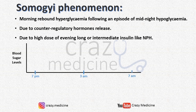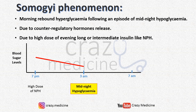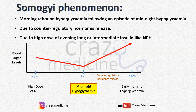Let me explain graphically. Suppose at 7 pm a high dose of NPH is administered. Its spike will come around 3 am, which will cause midnight hypoglycemia, and due to this hypoglycemia there is release of counter-regulatory hormones, which will cause early morning fasting hyperglycemia.